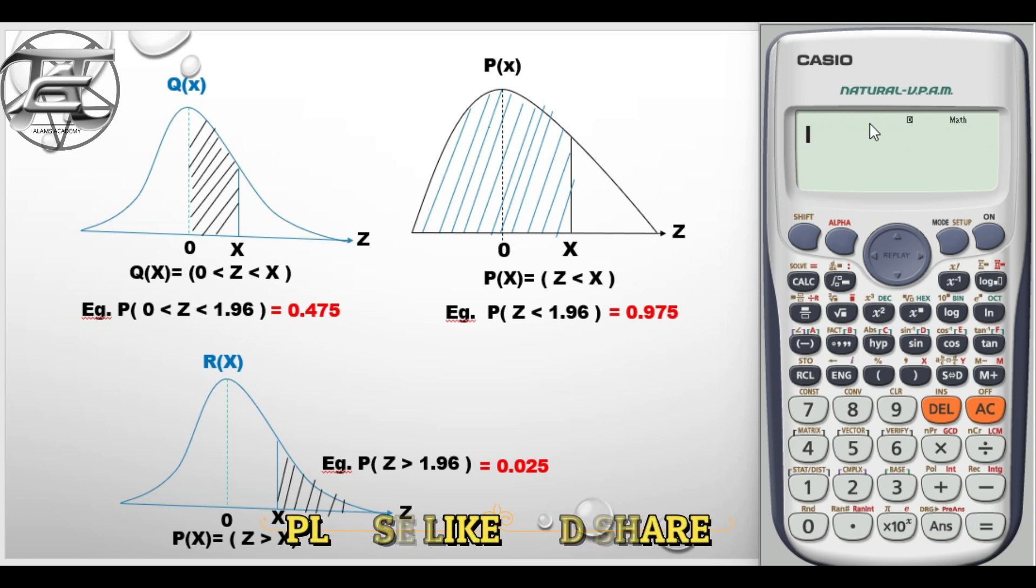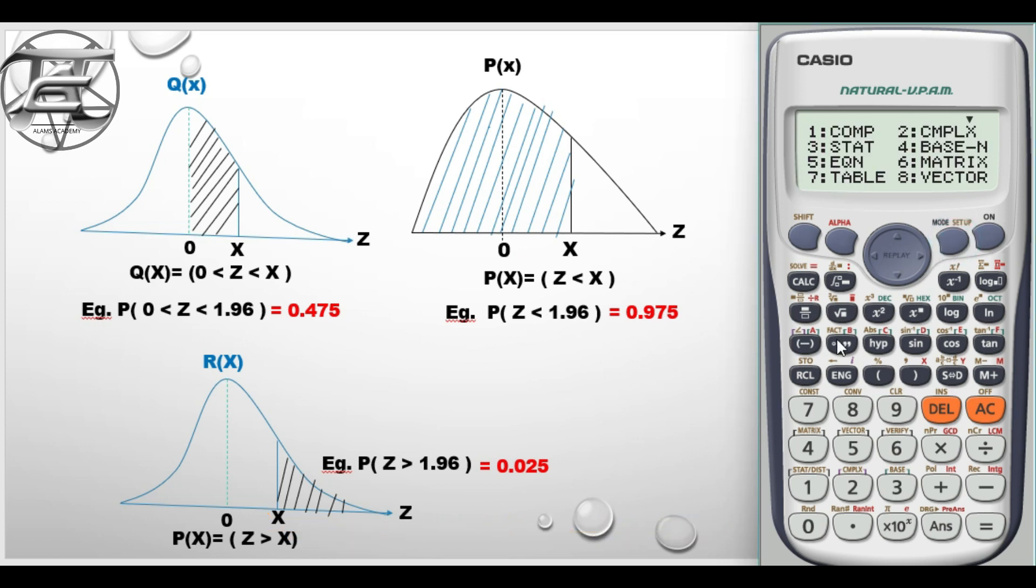As we can see here it is not in the stat mode, and so to change it to the statistics mode we press mode 3, which is our statistics, and then we don't need any of these so we just press AC.